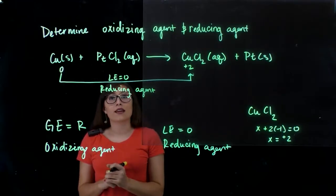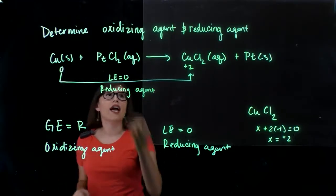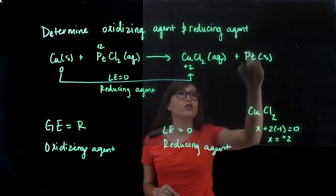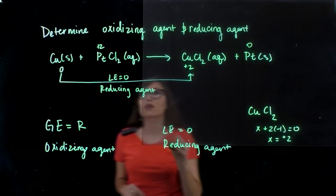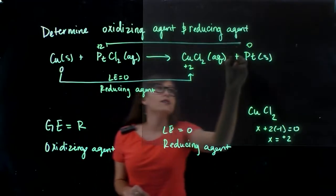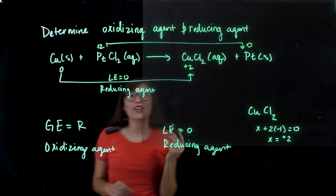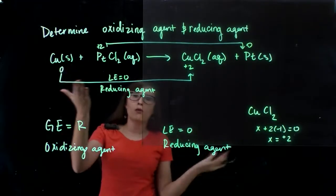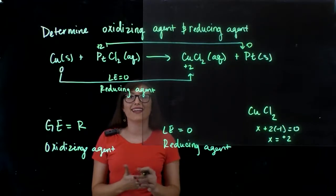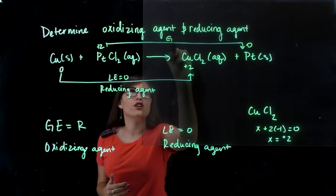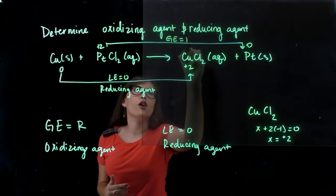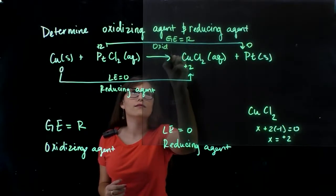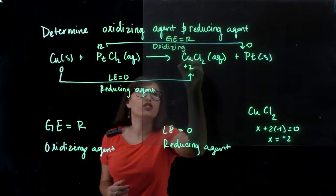Let's look at platinum. In this case, it's going to have an oxidation number of plus 2, and it goes from plus 2 to 0. So we are gaining electrons because it's going from a positive number, plus 2, to a more negative number. This is undergoing reduction, so this must be my oxidizing agent.